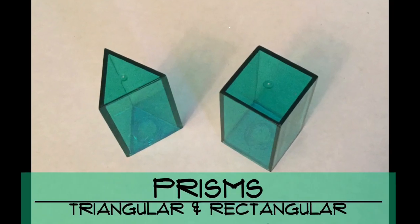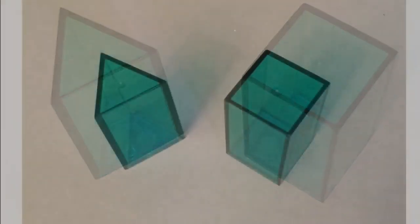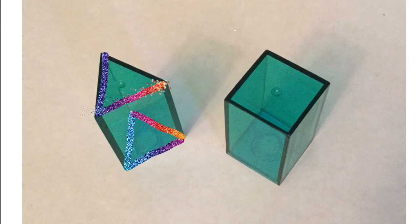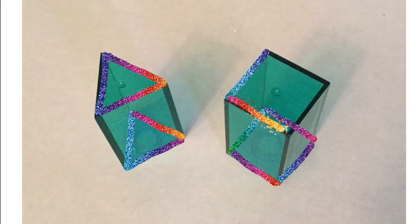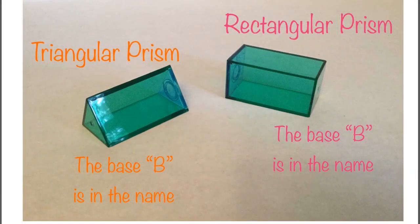Triangular and rectangular prisms are 3D shapes. A prism is defined by a 3D shape that has parallel bases. If you look here, I am outlining the triangular bases, and you can see they are on opposite sides and will run parallel. Same with over here, I am outlining the rectangular bases. They are the top and the bottom, which will run parallel.